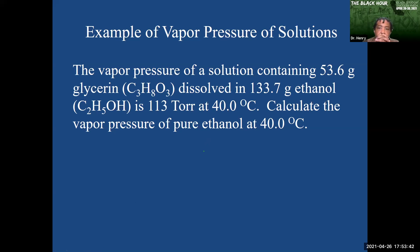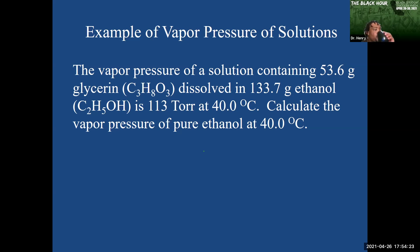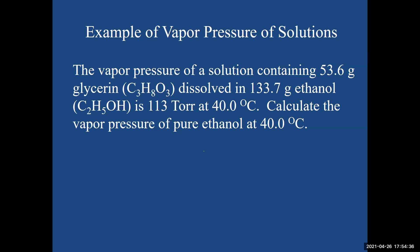Okay, here's a question for us. The vapor pressure of a solution containing 53.6 grams of glycerin (C3H8O3) dissolved in 133.7 grams of ethanol (C2H5OH) is 113 torr at 40.0 degrees Celsius. Calculate the vapor pressure of pure ethanol at 40 degrees Celsius.